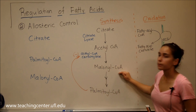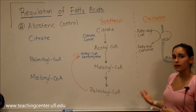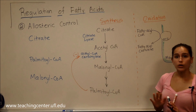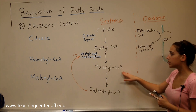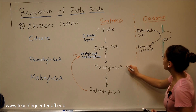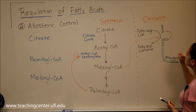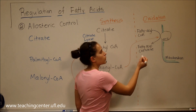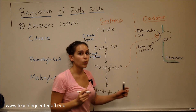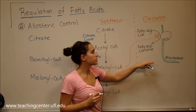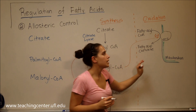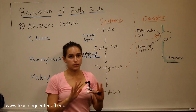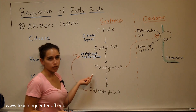Malonyl-CoA also plays an important role: when we are actively making fats, malonyl-CoA inhibits carnitine acyltransferase 1. This prevents fatty acyl-CoA from being converted to fatty acyl-carnitine and transported into the mitochondrion for oxidation. So malonyl-CoA signals oxidation to stop — there's no need to oxidize fats when we're actively synthesizing them.